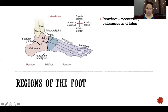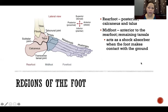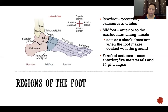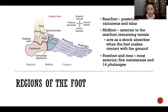Regions of the foot: the rear foot is the posterior portion made up of only the calcaneus and talus. The mid foot is anterior to that and includes the remaining tarsals — we have seven tarsals total, talus and calcaneus being the first two, so the other five make up the mid foot. This area acts as a shock absorber when the foot makes contact with the ground. Then we have the forefoot and toes, the most anterior region, which includes the five metatarsals and 14 phalanges on each foot.